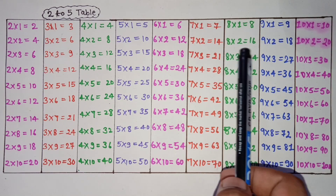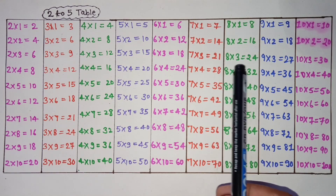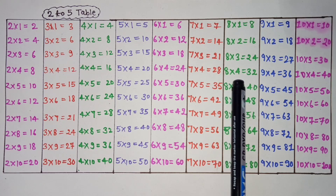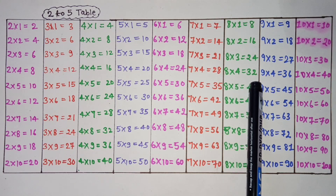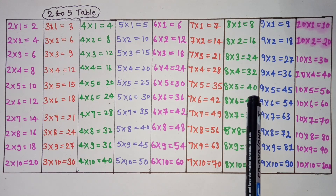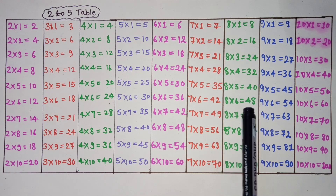8 2s are 16, 8 3s are 24, 8 4s are 32, 8 5s are 40, 8 6s are 48.